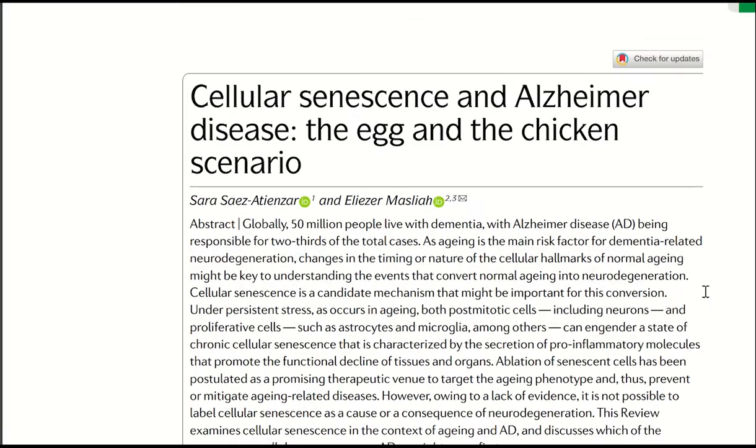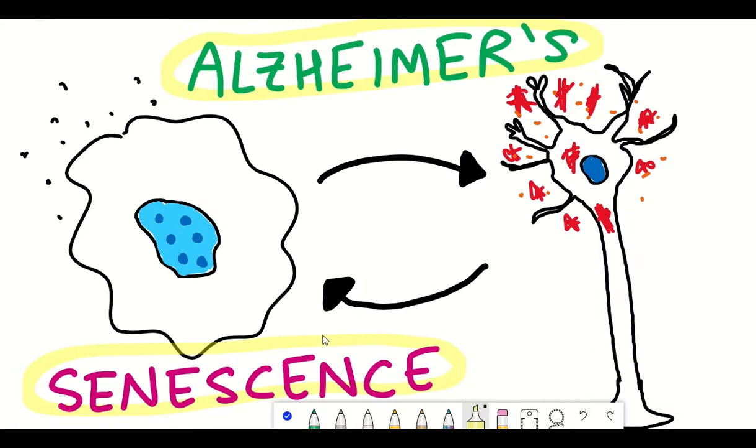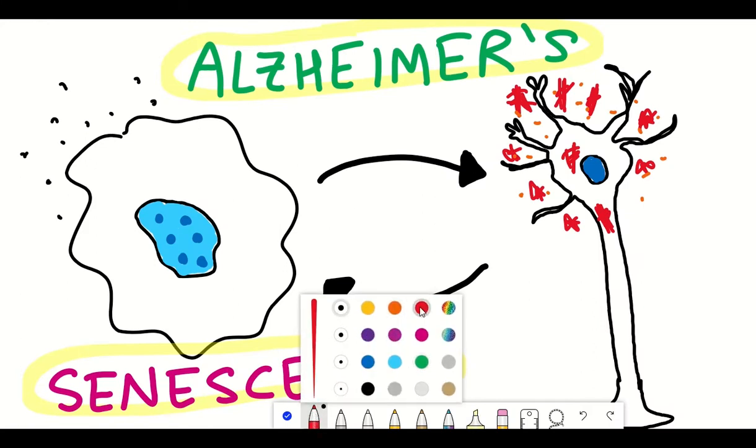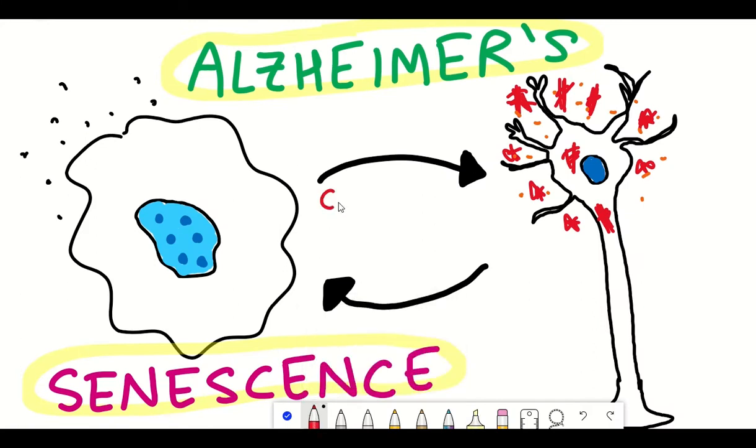I recently read this Nature Review article that discussed this interaction as the egg and the chicken scenario. In this video I'll break down what cellular senescence is and what Alzheimer's disease is, then try to explain what we currently think may be the link between the two and where more research needs to be focused on in the future.